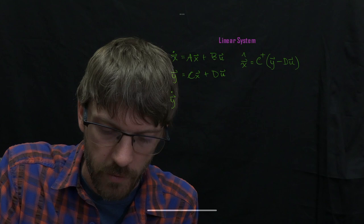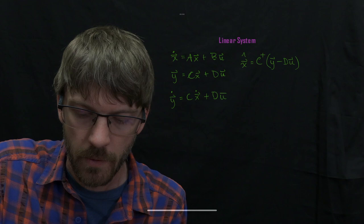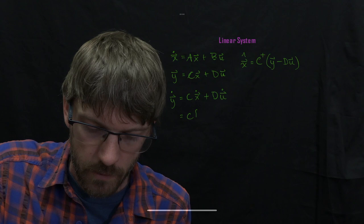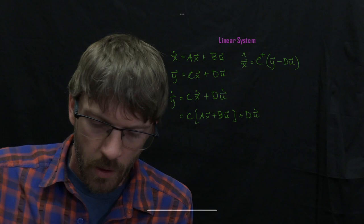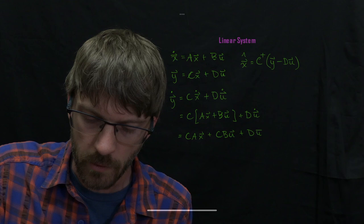So if we write down the time derivative of y, again we're assuming this is a linear time-invariant system, so C and D do not vary in time. So we just have C x dot plus D u dot. Of course we don't know x dot, but we can plug in Ax plus Bu for that. So we'll get here C times Ax plus Bu plus D u dot. Now let's expand that out just so it's very clear. So we have CAx plus CBu plus D u dot.